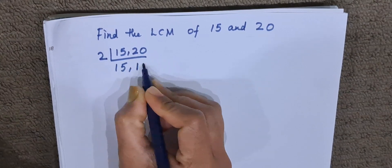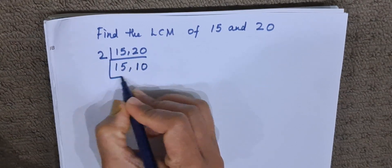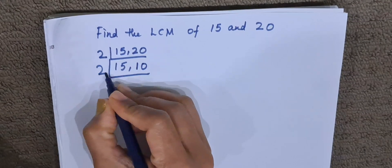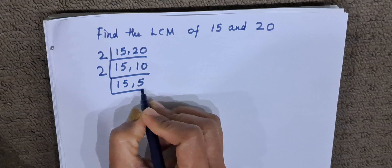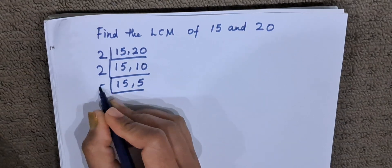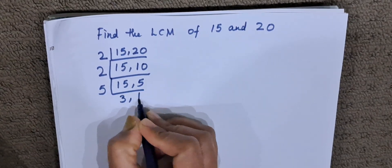2 divides 20 and it becomes 10. Again, this is divisible by 2, so 15 remains as it is. 2 times 5 is 10. Now 15 and 5: 5 times 3 is 15, 5 times 1 is 5.